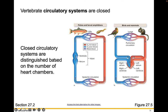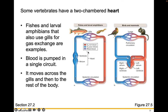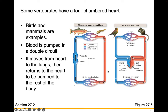Vertebrate circulatory systems are closed, and they're distinguished based on the number of chambers in their hearts. Birds and mammals have pulmonary circulation — our hearts send blood to our lungs to become oxygenated, and that oxygenated blood returns to the heart where it gets pumped out to the body. Fish and larval amphibians have a two-chambered heart and pump blood in a single circuit. Birds and mammals have a four-chambered heart and pump blood in a double circuit.